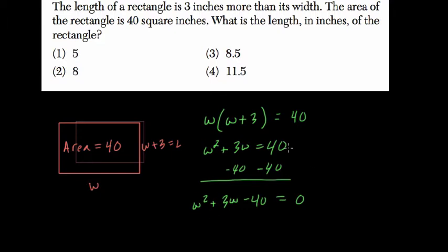And here this might not seem like we've gotten anywhere, but now we can factor this out, and the fact that it's equal to zero will allow us to quickly solve for w. So how do we factor these kind of quadratics?